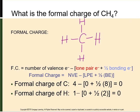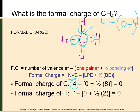Let's look at CH₄ and calculate the formal charge of carbon. We take the number of valence electrons for carbon, which is 4. That's our NVE. We subtract the lone pair electrons — carbon has no lone pairs — then we do half of how many bonded electrons are around carbon. There are 8 bonded electrons, so half of 8 is 4. So 4 minus 4 is 0; there is no formal charge on carbon.